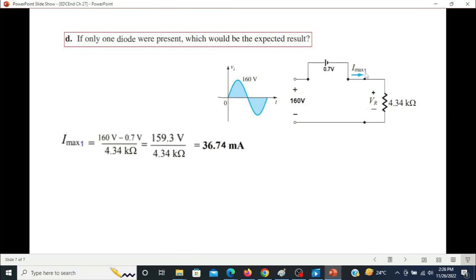So I maximum 1, just to distinguish, is VR which is 160 minus 0.7 divided by 4.34 kilohms, same as we did in the previous slide. So the current is 36.74 milliampere.